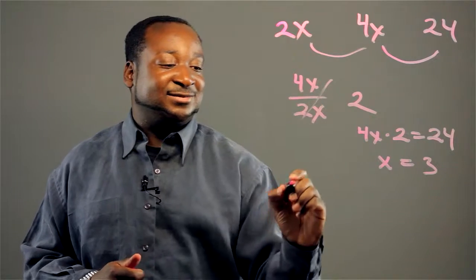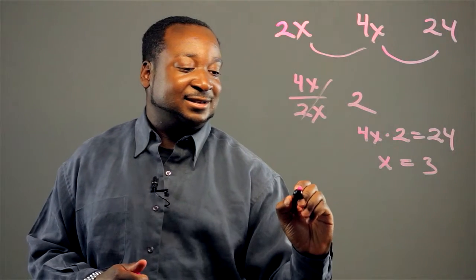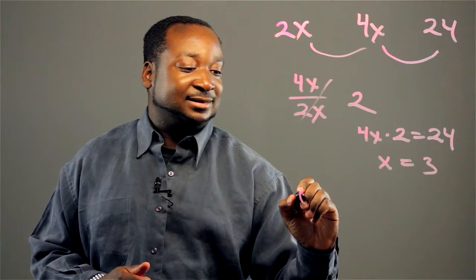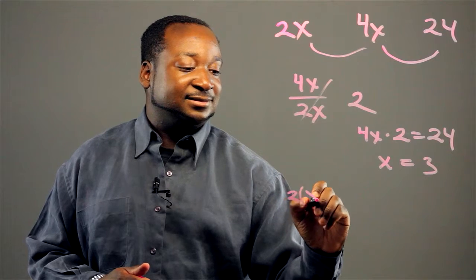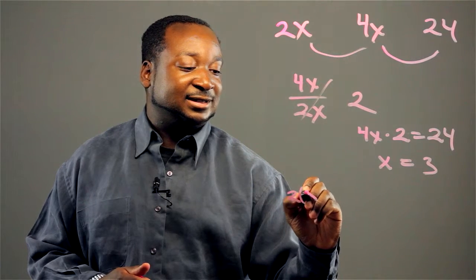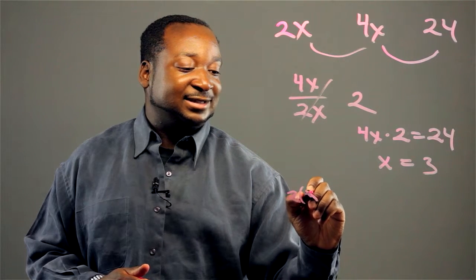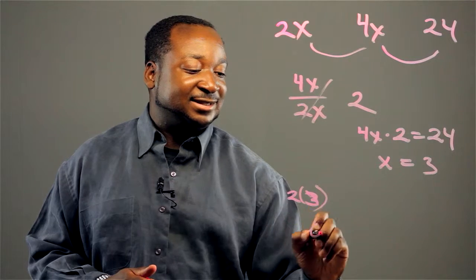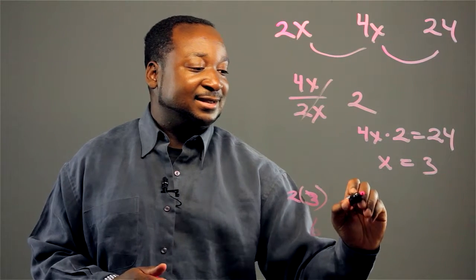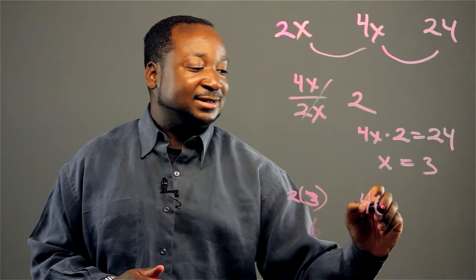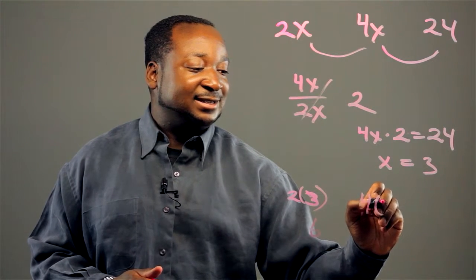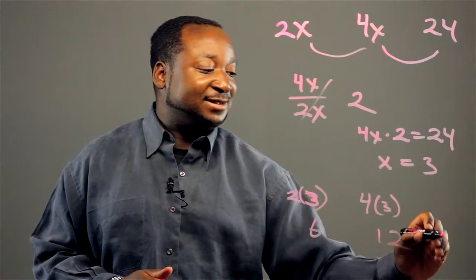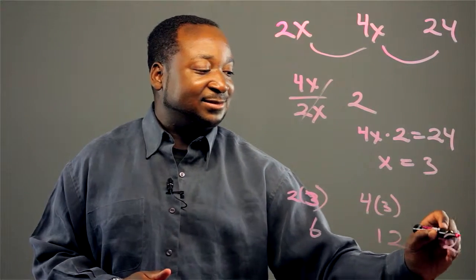And when you plug it in, we get our original numbers: 2 times x, which is 3, gives us 6; and 4 times x, which is 3, gives us 12; and 24. And then we have our geometric sequence.